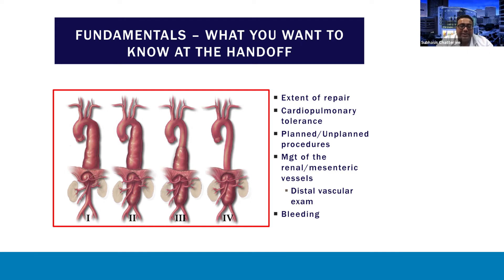You want to know what the cardiopulmonary tolerance was — how did the heart react, how did the lungs react, and how well did they tolerate surgery? You want to know what the planned procedures were, but especially what the unplanned procedures were: was there leg ischemia, more extensive mesenteric revascularization required, or a splenectomy necessary during dissection? You want to know what the management of the renal and mesenteric vessels was, as more extensive endarterectomy creates higher risk and those patients tend to benefit from a higher mean arterial pressure. You want to know the distal vascular exam and the extent of bleeding at the end of the case.